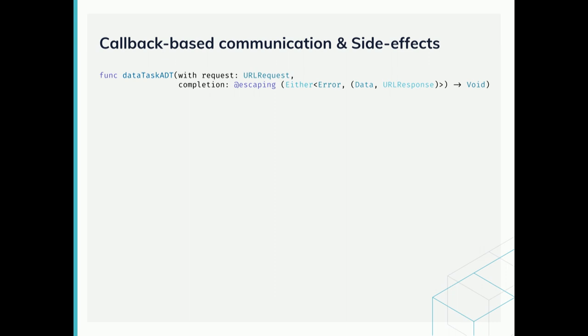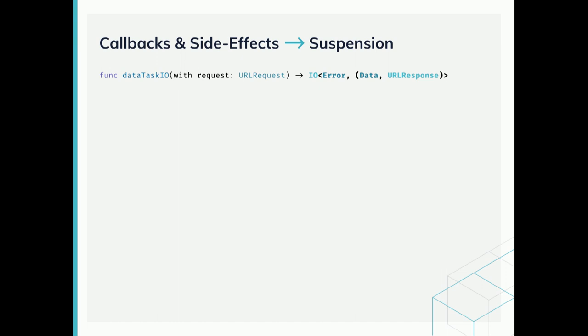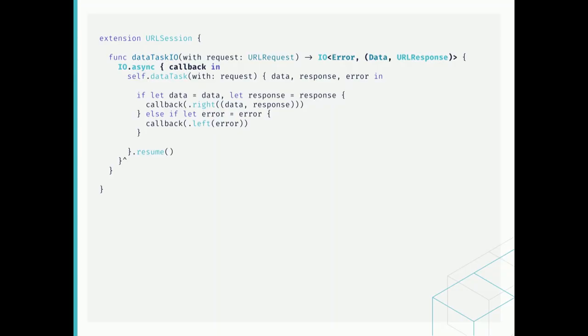Getting rid of the callbacks could be a little bit more difficult. But thankfully, Bow provides the IO data type that helps us in this task and has the additional benefit of suspending side effects. IO has an async constructor that helps wrapping callback-based operations. Thus, instead of communicating via the callback, we can just return an IO value that describes our network operation and can be composed with others using monadic combinators like map or flatMap.